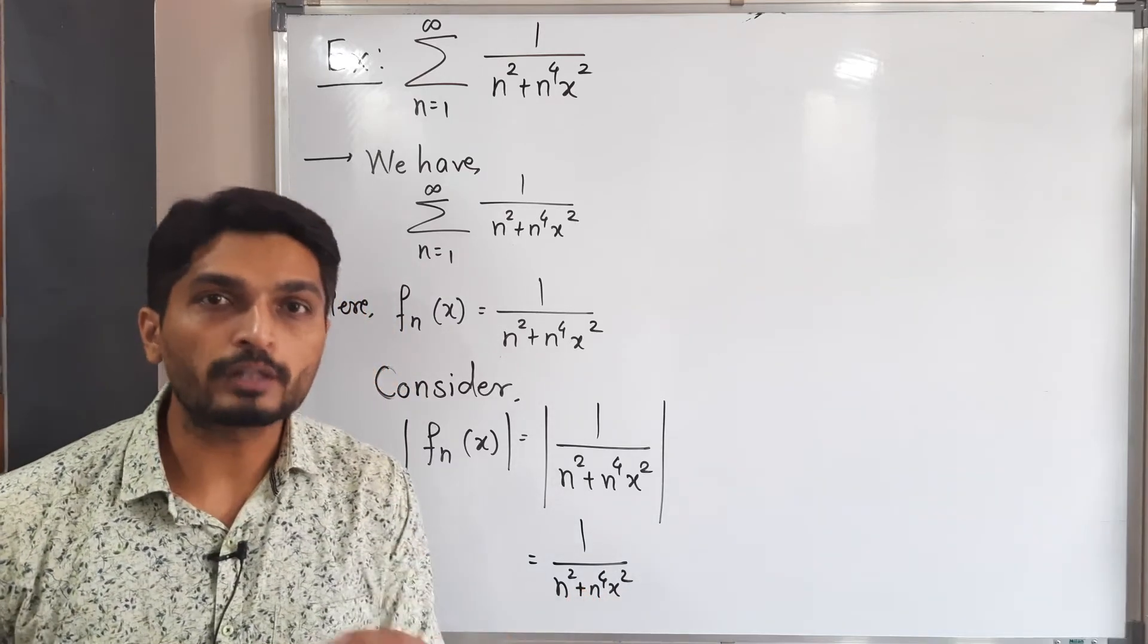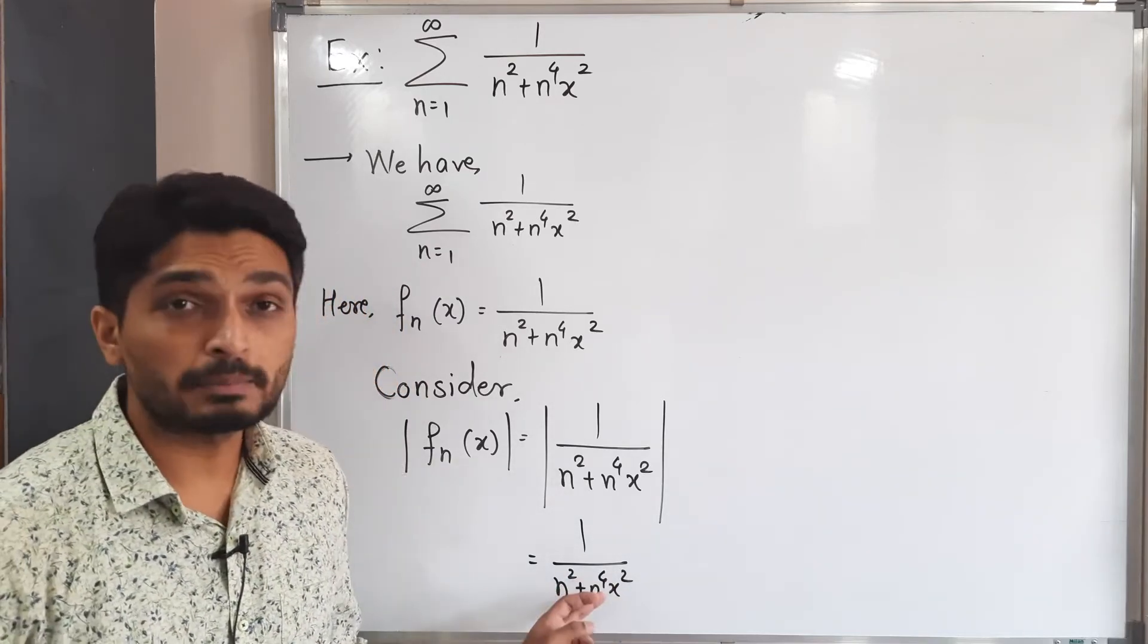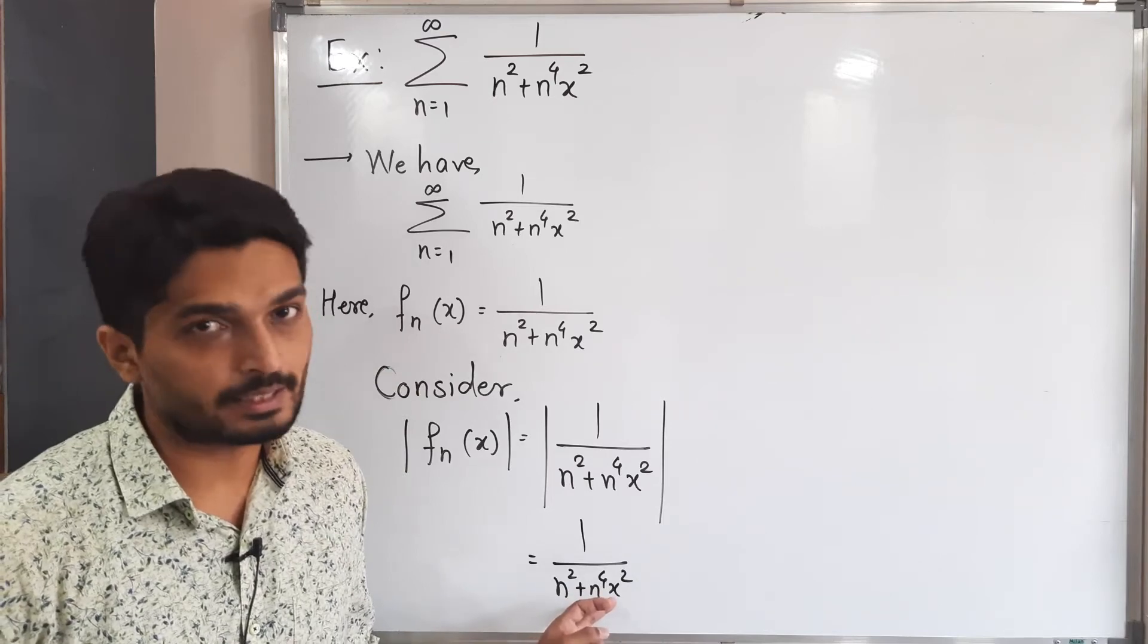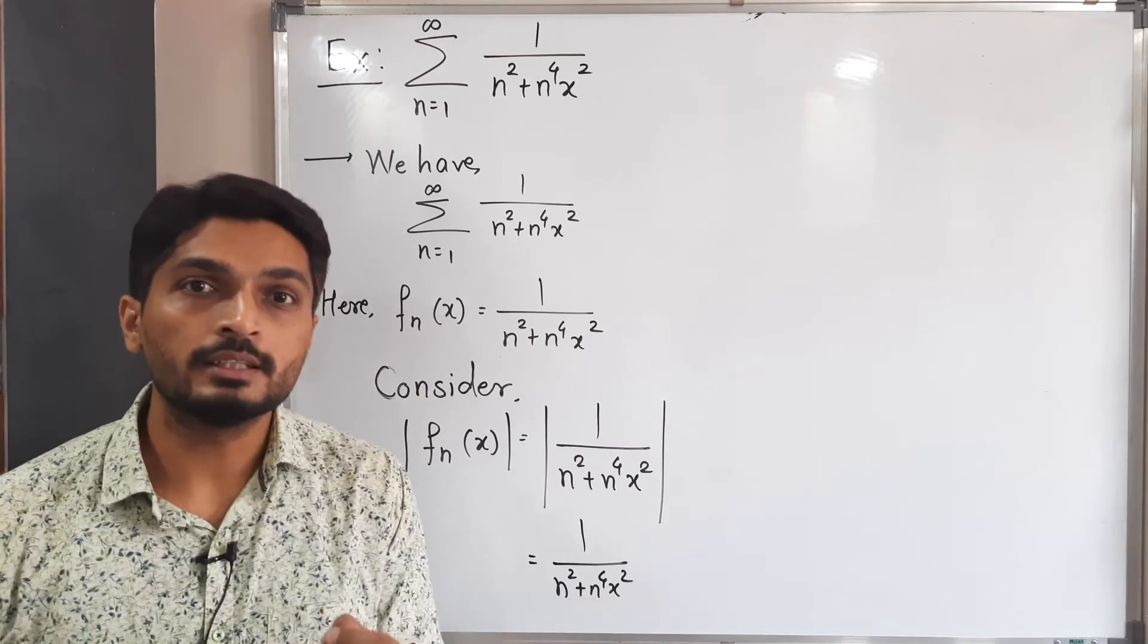n raised to 4 x square is a non-negative number. See x can be 0, so it can be 0 but it cannot be negative since it has a square.